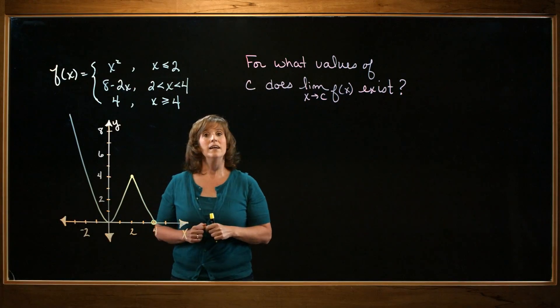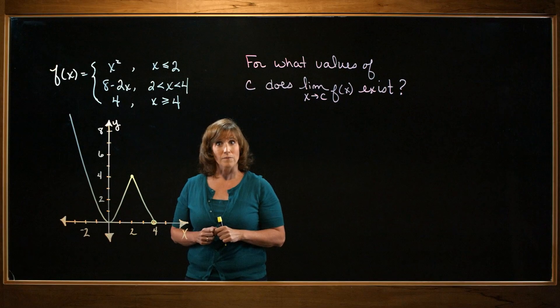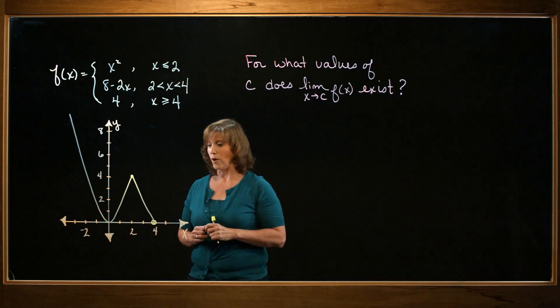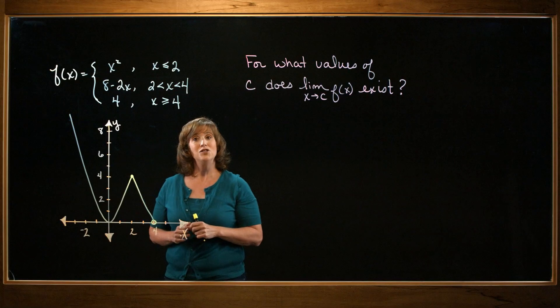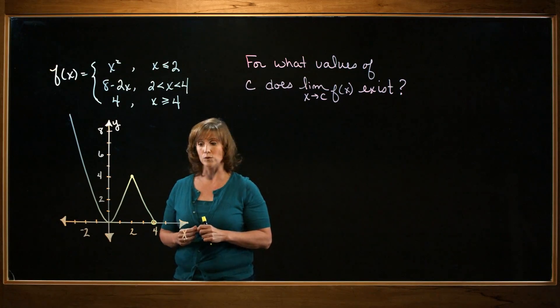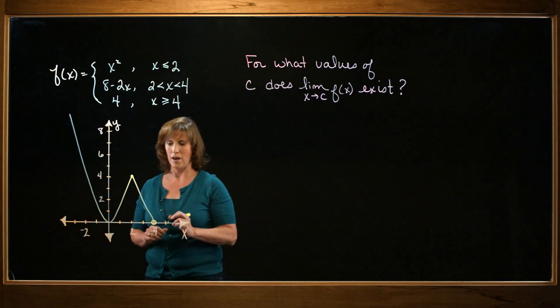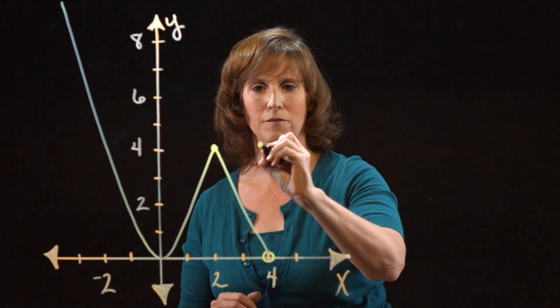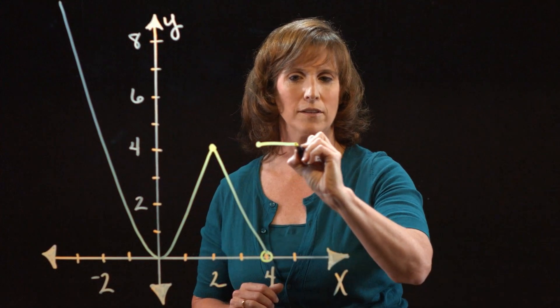My last tier is f of x equals 4. That's just a horizontal line at level 4. This time, I do want to use this tier when x equals 4, so I'll have a solid dot at 4. So I'll come up here, the point will be on my curve, and I have a horizontal line.